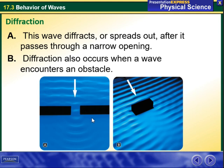This picture right here shows that this wave diffracts or spreads out after it passes through a narrow opening, as you can see. Diffraction also occurs when a wave encounters an obstacle. So the waves are moving normally until they hit an obstacle right here.